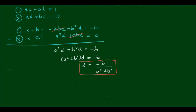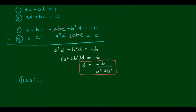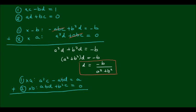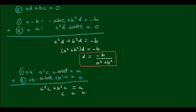Now for c. If I multiply equation 1 by a, I get a squared c minus abd is equal to a. And then if I multiply equation 2 by b, I get abd plus b squared c is equal to 0. So then similarly, adding these, the abd's will cancel out. And I'm left with a squared c plus b squared c is equal to a. And that of course translates to c is equal to a divided by a squared plus b squared. And this is the second result that I'm looking for.